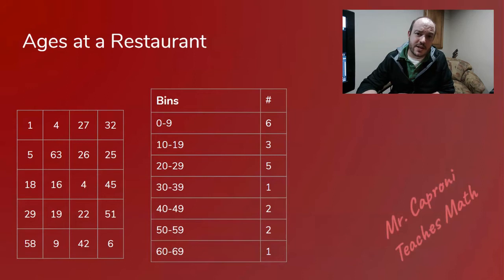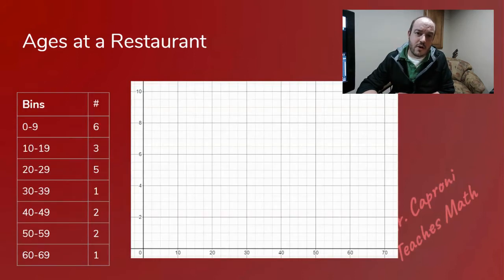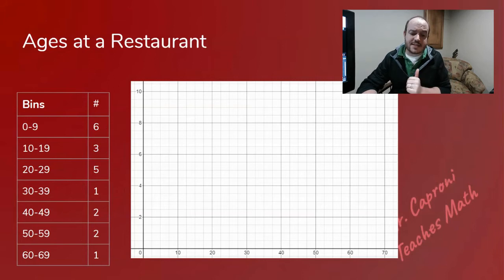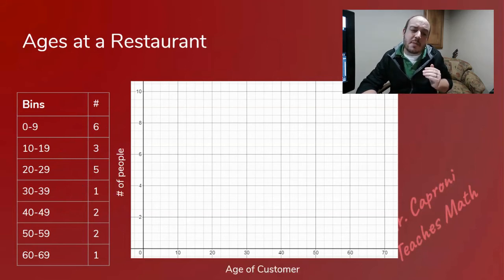Now that we have our chart we can go ahead and start working on our actual graph. So for our histogram we want to make sure we start just like most graphs, labeling our axes. So across the bottom is going to be the age that we're dealing with of people at this restaurant, whereas up the left hand side that's the number of people that are going to fall into each of those age ranges.